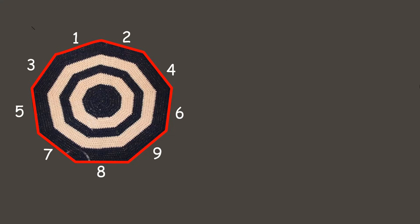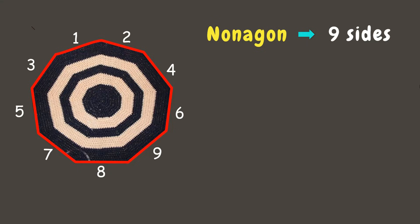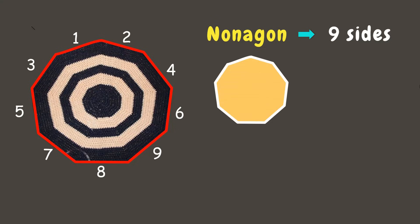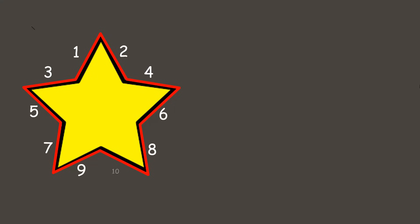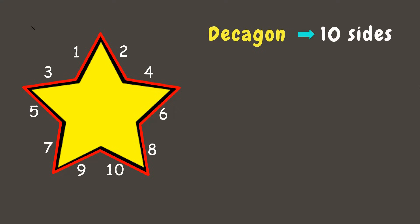A polygon with nine sides is called a nonagon. A nonagon has nine sides and nine angles. Here are other examples of nonagon. And a polygon with ten sides is called a decagon. A decagon has ten sides and ten angles. Here are other examples of decagon.